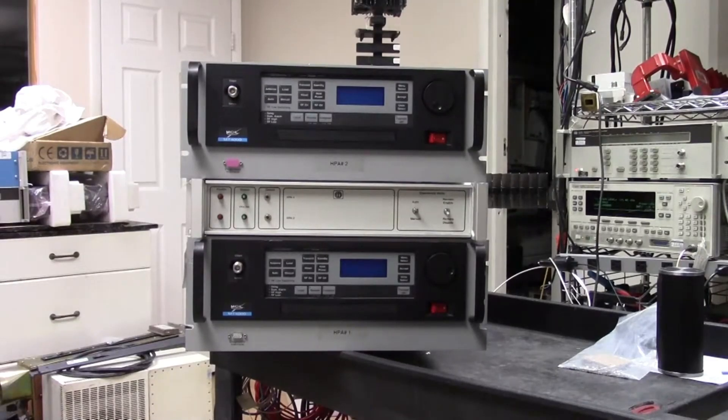The output of one will be directed towards the antenna and that will be the live amplifier. The other one will be directed to a dummy load that you'll see on the back of this configuration in a moment.